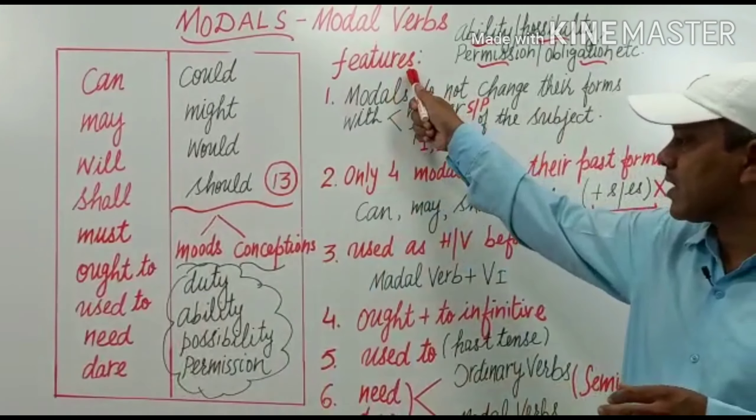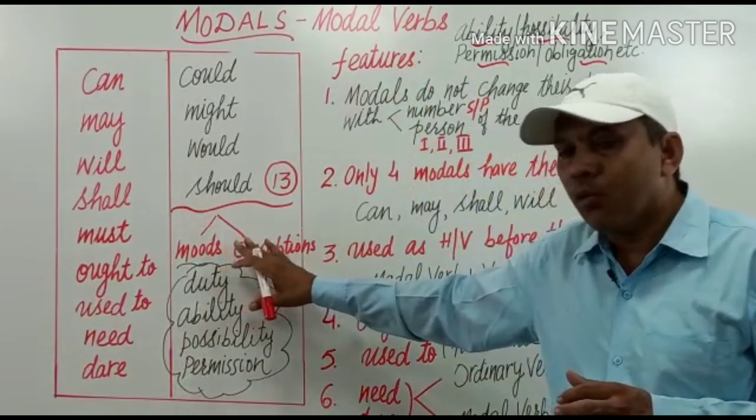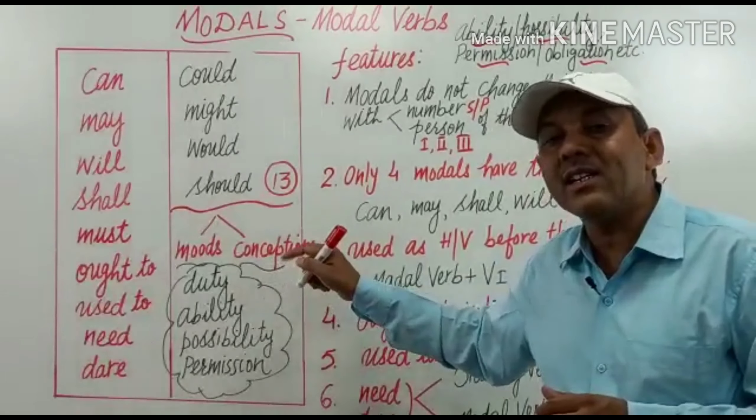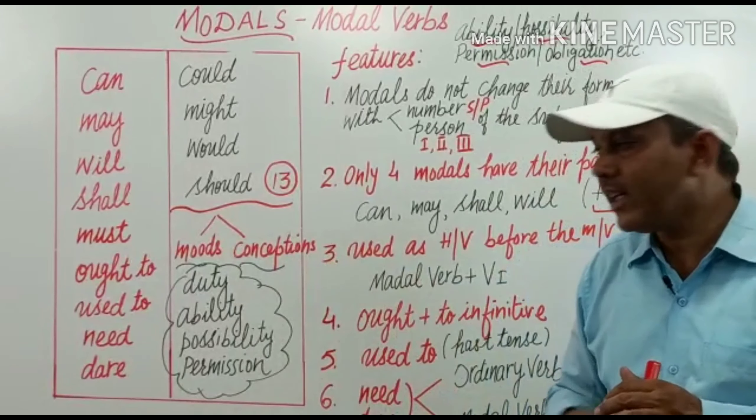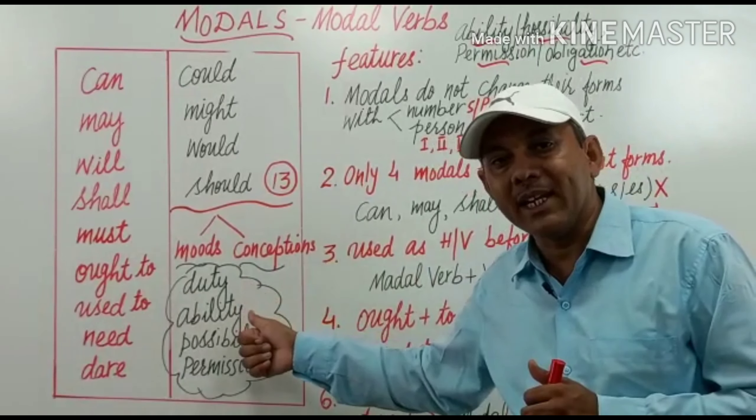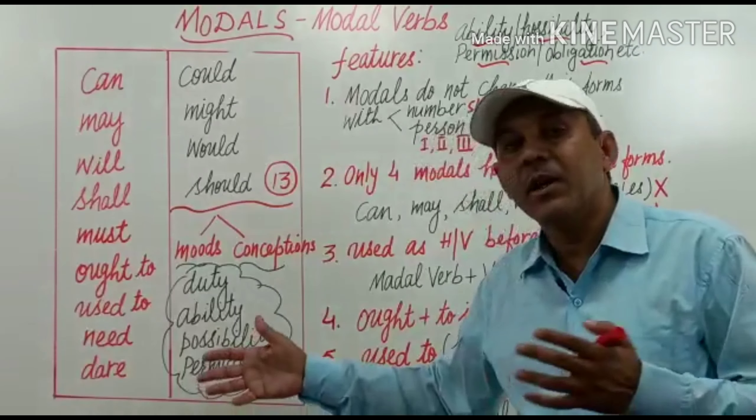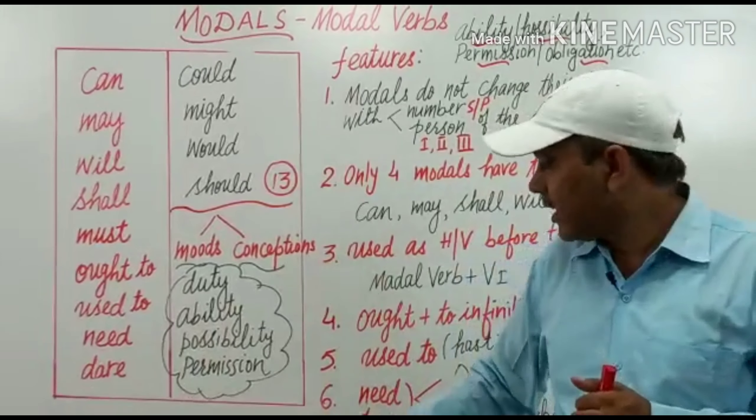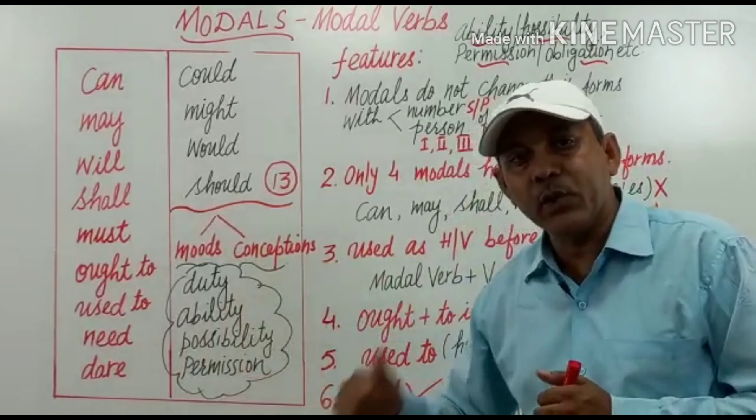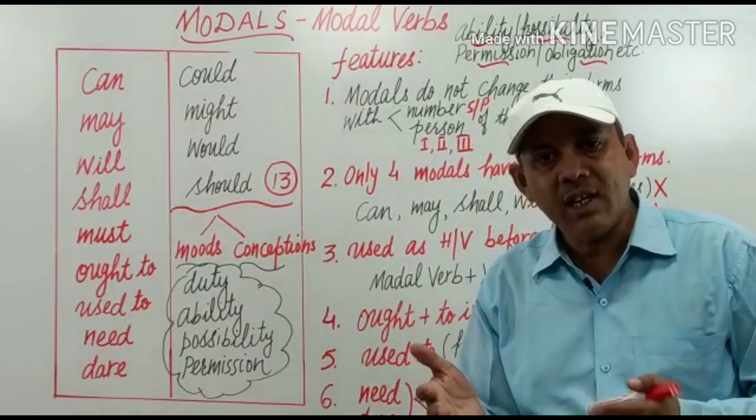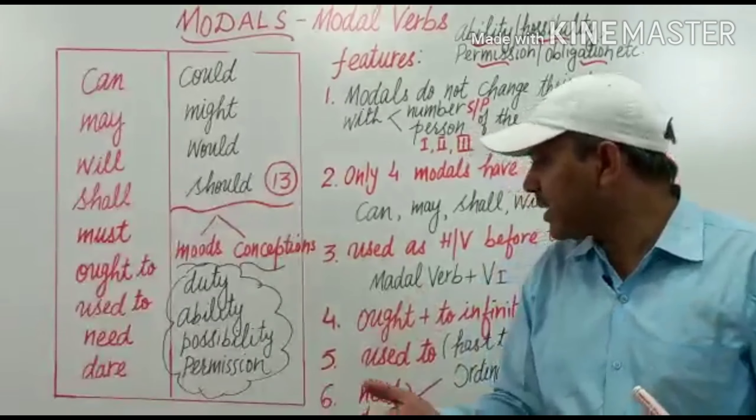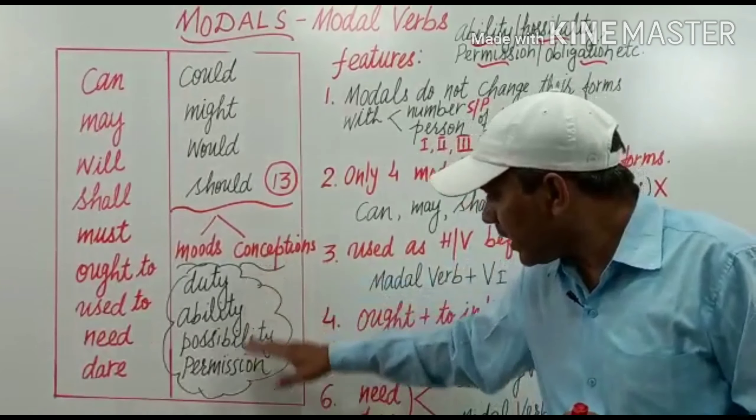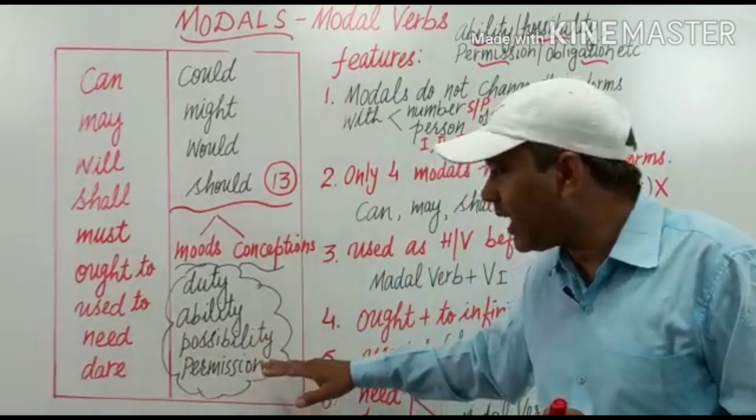What are the features? What do they tell? They tell the conception of mind related with duty, ability, possibility, permission, obligation, etc. Duty, obligation, permission, possibility, ability of someone. Inko ye express karte hain sentence mein.